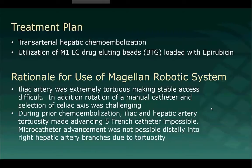The rationale for the utilization of the Magellan robotic system was twofold. First, the patient's iliac artery was extremely tortuous, which made stable access extremely difficult, and rotation of a manual catheter for selection of the celiac axis was extremely challenging. Second, during prior chemoembolization, both the iliac and hepatic tortuosity made advancement of a 5-French catheter nearly impossible, and microcatheter advancement distally into branches of the right hepatic artery was not possible.